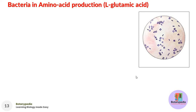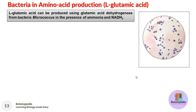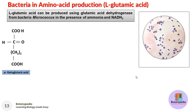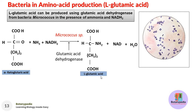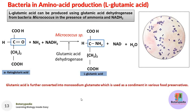L-glutamic acid can be produced using glutamic acid dehydrogenase from the bacteria Micrococcus in the presence of ammonia and NADH2. The substrate is alpha-ketoglutamic acid; ammonia and NADH2 are added, and in the presence of Micrococcus species supplying glutamic acid dehydrogenase, the reaction produces L-glutamic acid. The glutamic acid is further converted into monosodium glutamate (MSG), used as a condiment in various food preservatives.